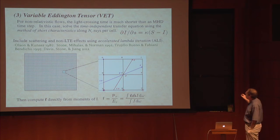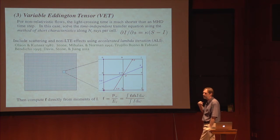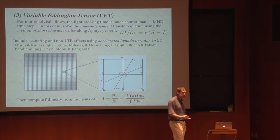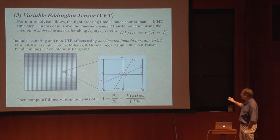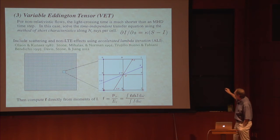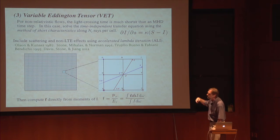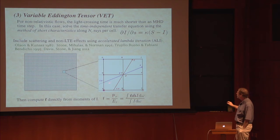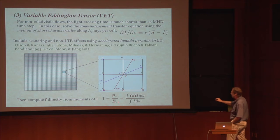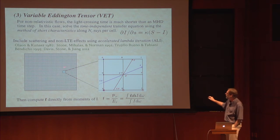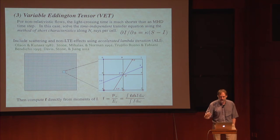Finally, I can compute the Eddington tensor directly — the VET method — by solving the time-independent transfer equation. Assuming the light crossing time is extremely fast, valid for Newtonian flows, I take snapshots of the flow at every time step and solve the time-independent transfer equation. I discretize the specific intensity into many different angles over the entire mesh, solve the transfer equation including scattering and sources, take numerical quadratures to compute the pressure and energy density directly, and then I know what the Eddington tensor is everywhere. The only assumption is that the light crossing time is very fast.